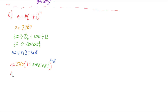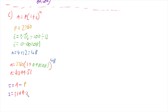So A equals 2,760 times 1 plus 0.003083 recurring, all to the power of 48. Working this out, we get a final amount of $3,199.53. Subtracting what we started with: $3,199.53 minus $2,760 gives us an interest gained of $439.53.